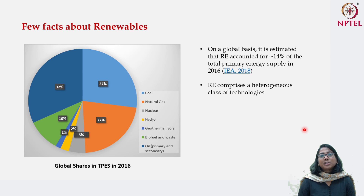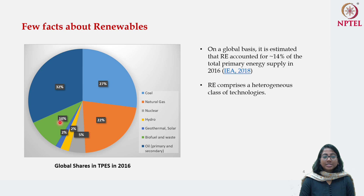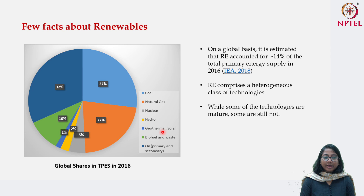Renewable is not one homogenous category. If you look at this chart, the whole system of power production is actually dominated by coal which contributes 27 percent, natural gas which contributes 22 percent, and both primary and secondary oil which contributes 32 percent. There is a 5 percent contribution from nuclear. The 14 percent contribution from renewables breaks down as: 10 percent from biofuel and waste, 2 percent from hydro, and the remaining from geothermal, solar, wind, etc. — contributing only 4 percent of total primary energy supply in 2016.